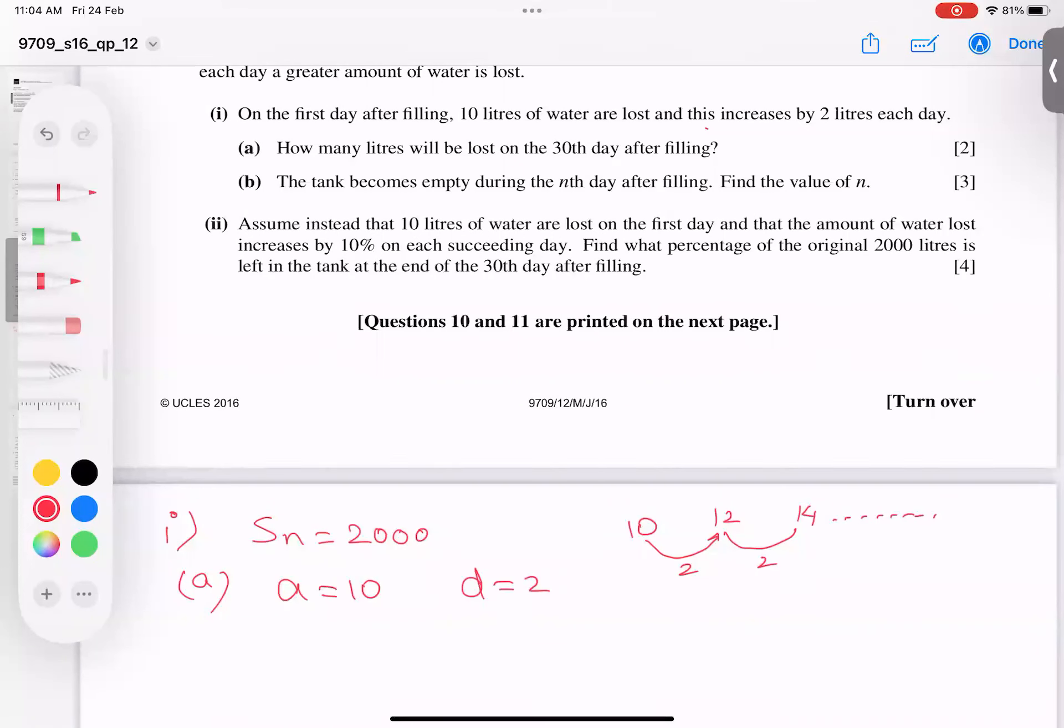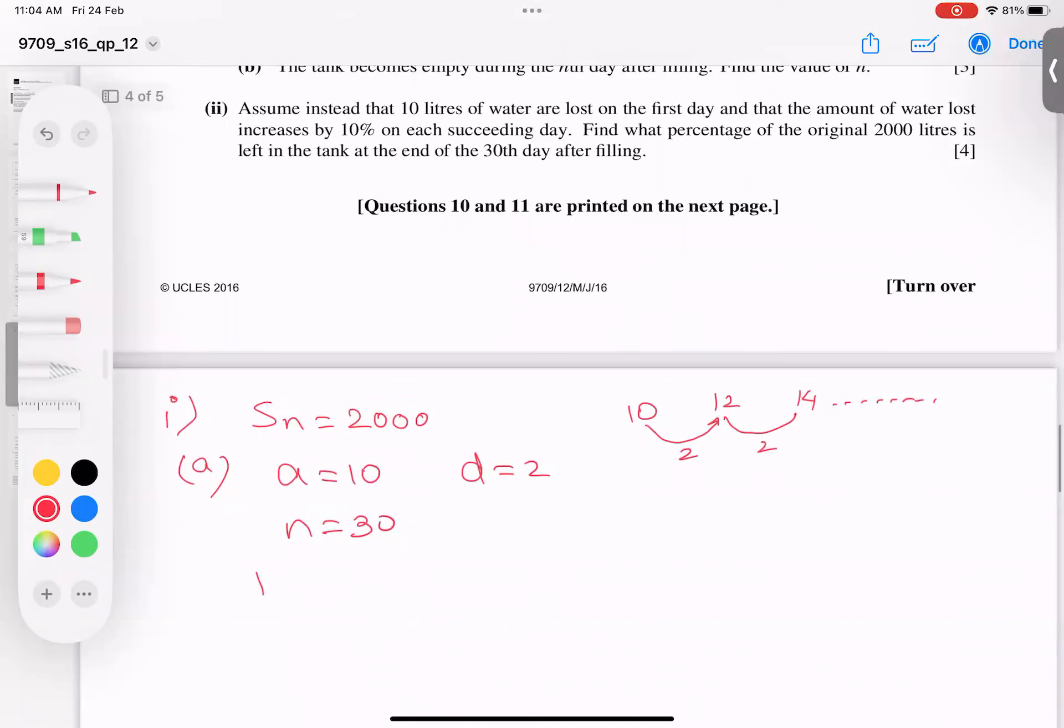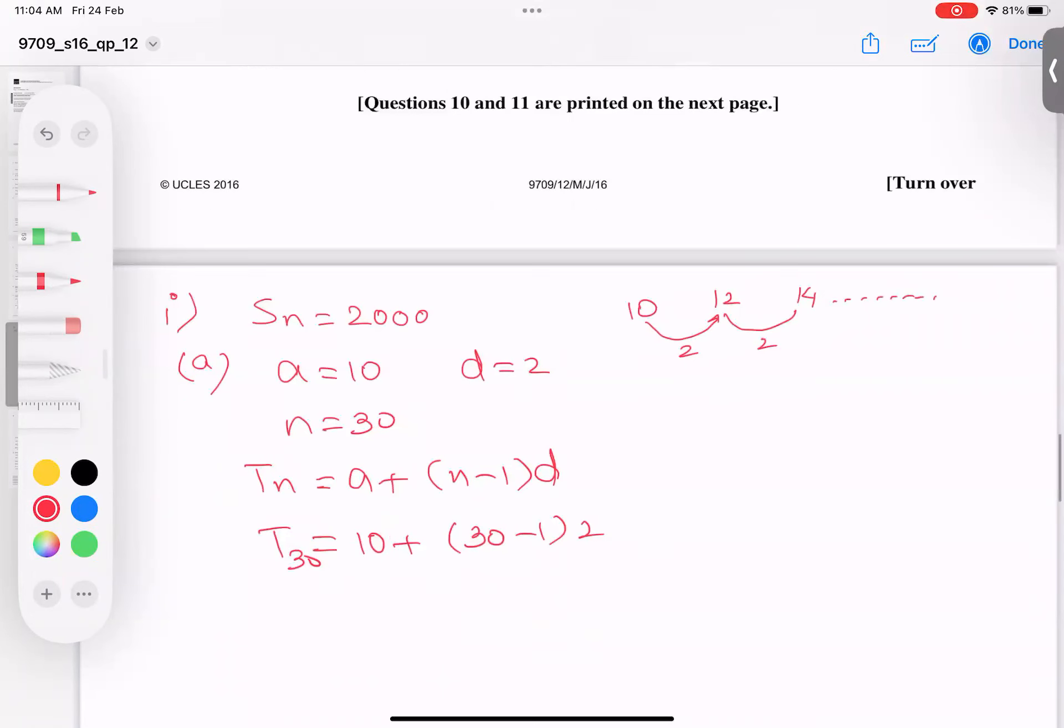d is very clear, it's 2. We're looking for n=30. The first part is simple. dn equals a plus (n minus 1) times d. Substituting values: d30 = 10 + (30-1) × 2 = 10 + 29 × 2 = 68 liters. So on day 30, 68 liters are lost.